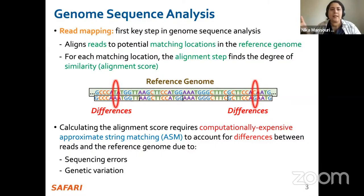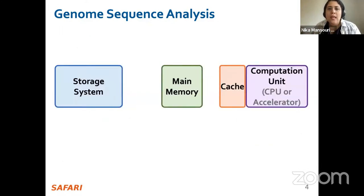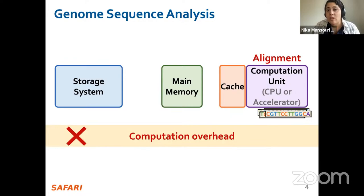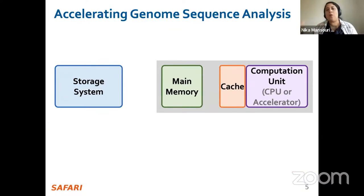These differences can represent sequencing errors or genetic variations, and based on that, biologists, healthcare providers, or other scientists can draw conclusions, provide personalized medicine, or perform outbreak tracing. However, this operation requires computationally expensive approximate string matching, and read mapping performs this alignment on large genomic datasets containing millions of reads. Therefore read mapping is both computationally expensive and incurs high data movement overhead, motivating significant effort into improving read mapping performance.